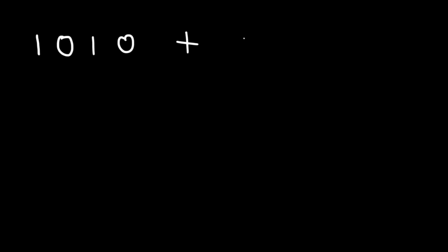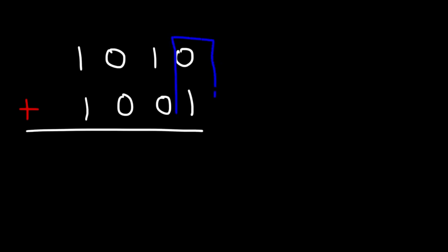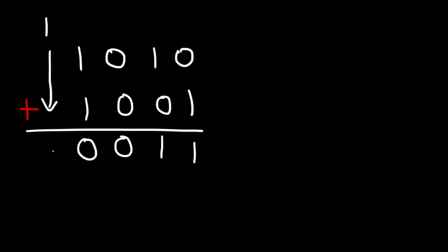Now let's work on some example problems. Go ahead and add these two binary numbers: 1010 plus 1001. The first thing you should do is line up these numbers and then add up the numbers column by column. So here we have 0 plus 1, which is 1. In the next column, we have 1 plus 0, which is also 1. And then for the third column, that's 0 plus 0, which is 0. And then for the last one, it's 1 plus 1, which is 0, but you need to carry over a 1, so you get 10.